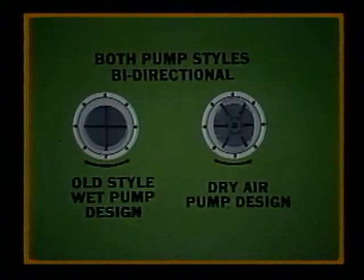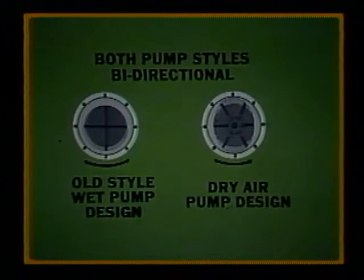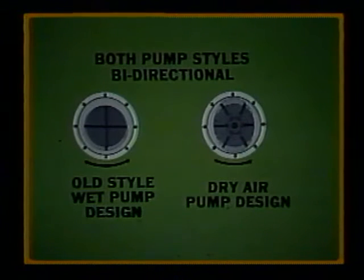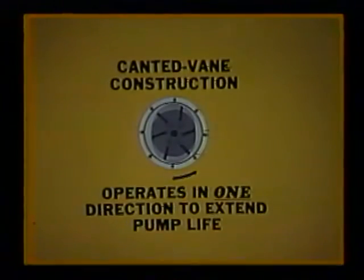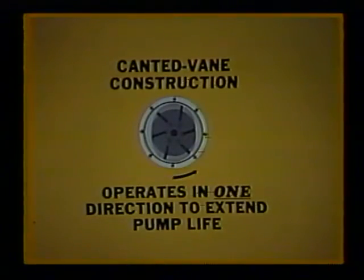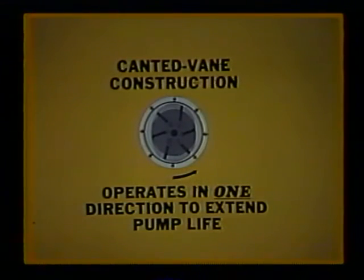Many of these dry air pumps are bi-directional, meaning they can be operated either clockwise or counterclockwise. To accomplish this, vane construction is much the same as an oil-lubricated pump, with the vanes radiating directly from the center of the rotor. On other types of dry air pumps, the vanes are canted in the direction of rotation. This allows the use of long vanes, which reduces tip velocity to increase their useful service life.